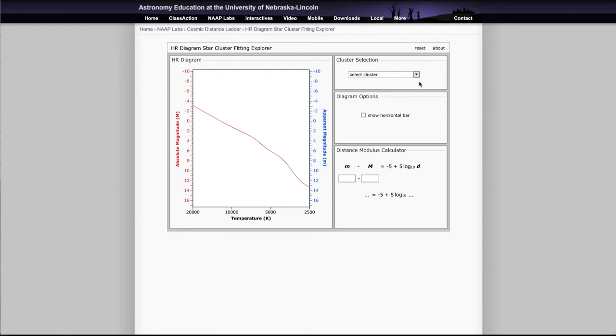So what you would find is we select our cluster here and let's look at, in this case, NGC 3293 and you'll see the stars. And it plots the stars for them and we see that it doesn't match the main sequence very well at all. But you can take this and drag it up and down to get your best fit to the main sequence.